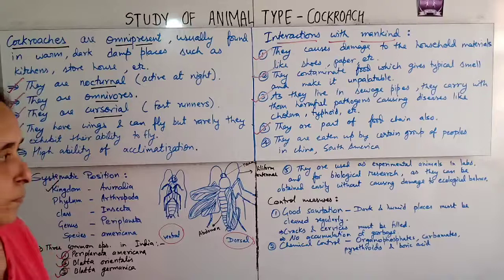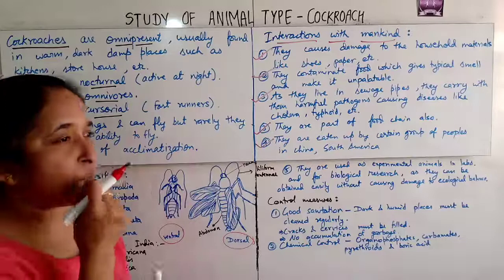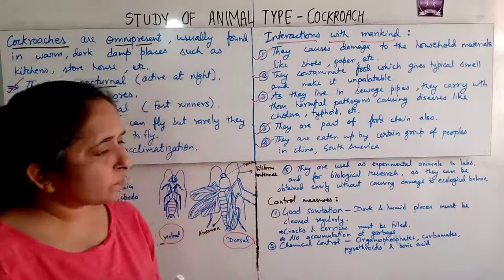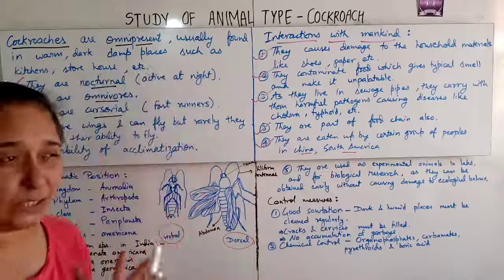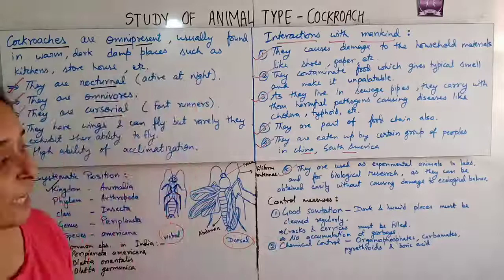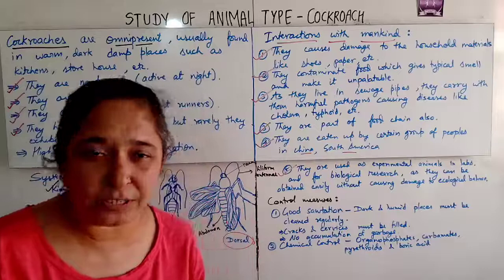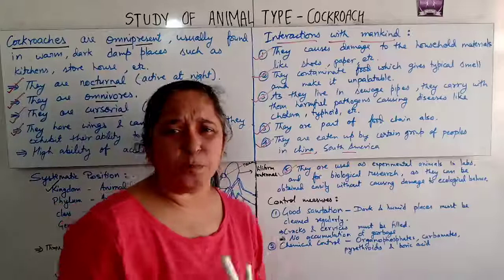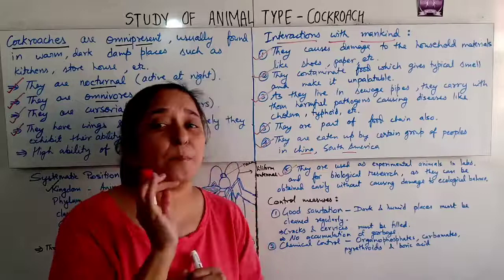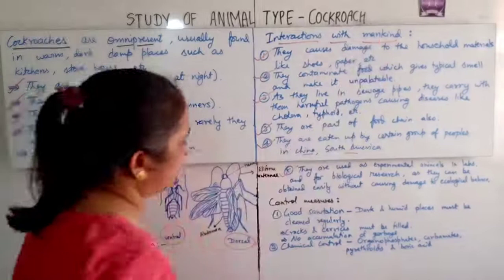Cockroaches are also part of the food chain. They are eaten by certain people in China and South America. They are used as experimental animals in laboratories and for biological research, as they can be obtained very easily without causing any damage to the ecological balance. These are the ways they interact with mankind.